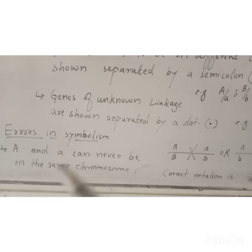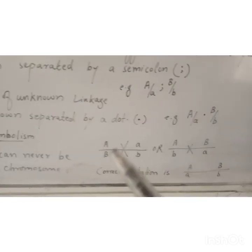There are many different types of errors made in symbolism. A and A can never be on the same chromosome. For example, placing dominant A and recessive A on the same side of the line — with dominant B and recessive B on the other side — is incorrect. A and A can never be written on the same side; they must be on both sides of the line. Similarly, writing A, B, B, and A is also incorrect notation, because after A, the next gene must also be A, not B.